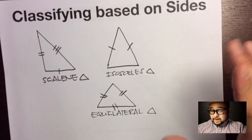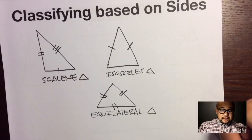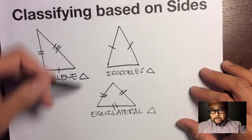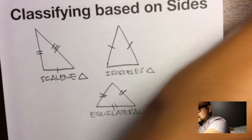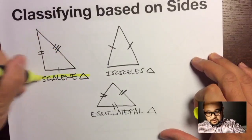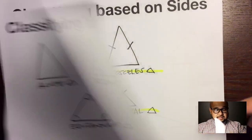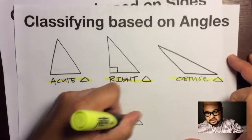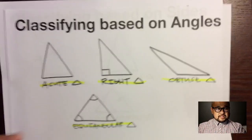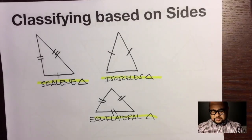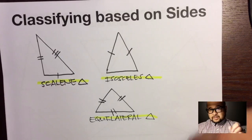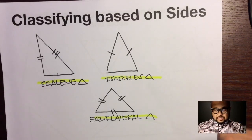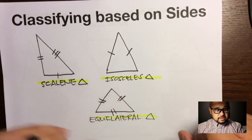Make sure you have these types of triangles in your notes and can differentiate between them. For sides: scalene — no sides are congruent; isosceles — two sides are congruent; equilateral — all three sides are congruent. For angles: acute, right, obtuse, and equiangular.